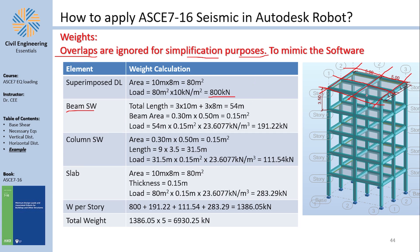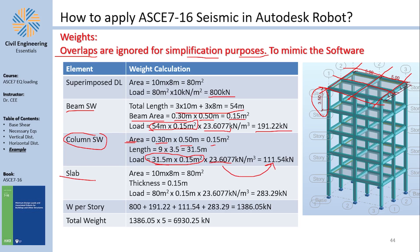The beam cross-sectional area is 0.3 by 0.5 = 0.15 m², so the beam load is total length × area × unit weight. For the columns, the cross-sectional area times 9 columns each 3.5 m tall gives 111.54 kN. The slab area is 10 by 8 = 80 m², and the load is volume times density. The total story weight W comes out to 6930 kN, which is needed for the vertical distribution and to calculate total structural weight.